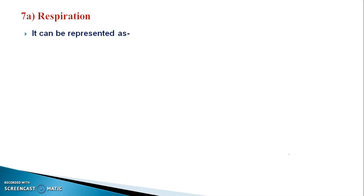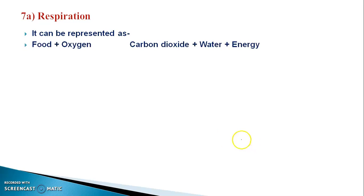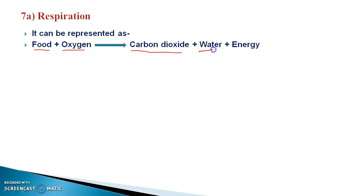The above statement can be represented by an equation showing how this food generates energy. Here is a food — means the glucose consumed by the living organism. In presence of oxygen, we can say the food reacts with or combines with oxygen, and forms carbon dioxide, water, and releases energy. This is the release of energy by the burning of food.